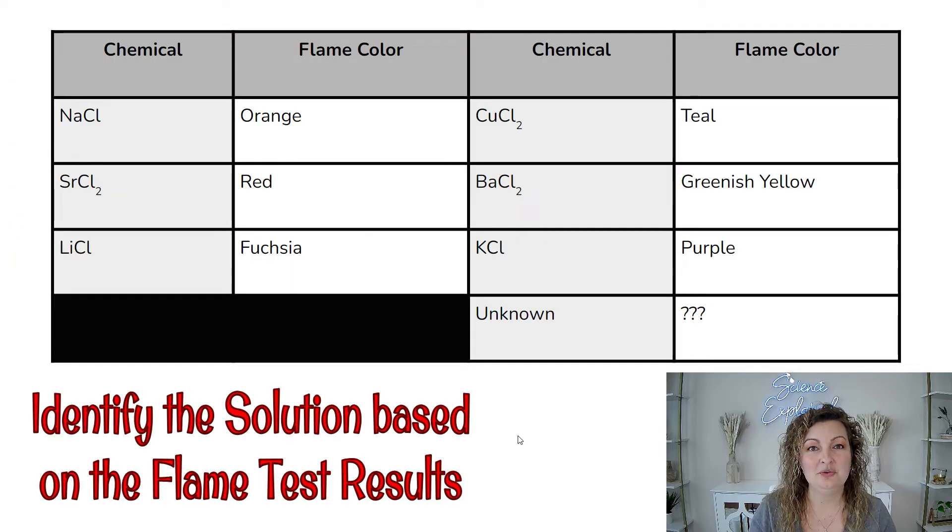So on your lab sheet, you can go ahead and answer your pre-lab questions, and then you will notice you have this chart, and this chart is going to help you determine which chemical you are burning at each lab station. So if you look, for example, NaCl will burn in an orange flame, and so on and so forth.